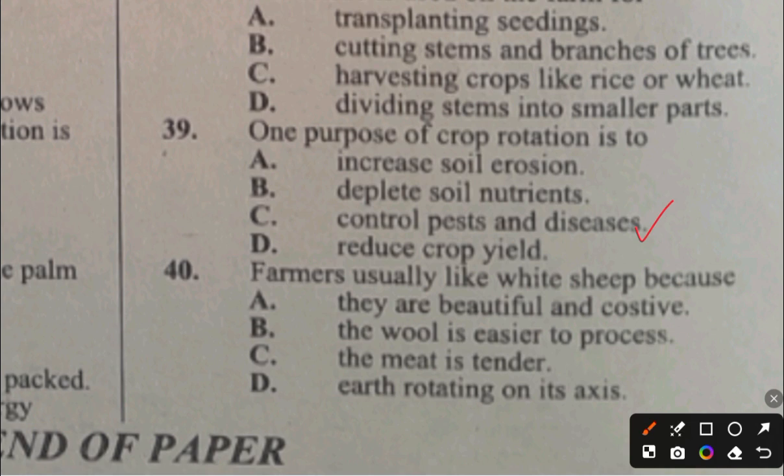Question 40. Farmers usually like white sheep because: A. They are beautiful and cursive, B. The wool is easier to process, C. The meat is tender, D. They are of one size. The answer to question 40 is B, the wool is easier to process.